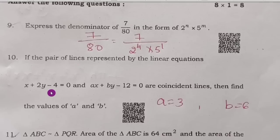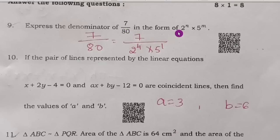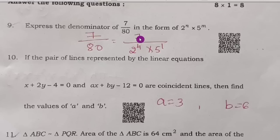Ninth question: express the denominator of 7/80 in the form 2ⁿ × 5ᵐ. We can write 80 as 2 × 2 × 2 × 2 × 5, that is 2⁴ × 5¹. Therefore, 7 divided by 2⁴ × 5¹ is the right answer.